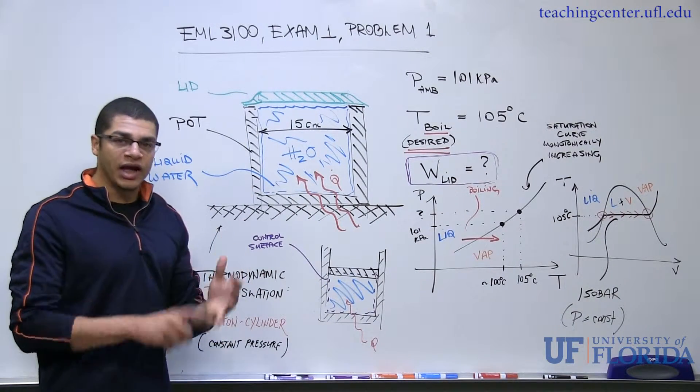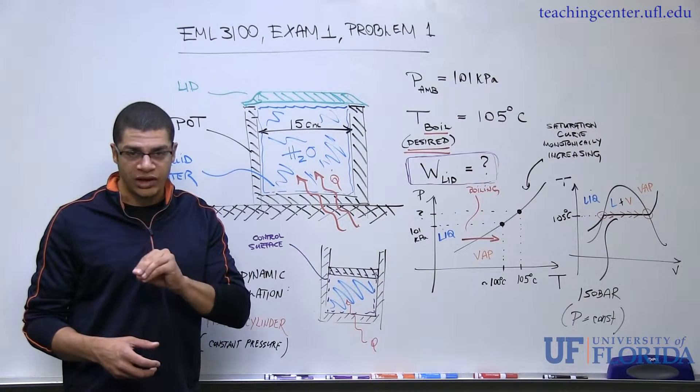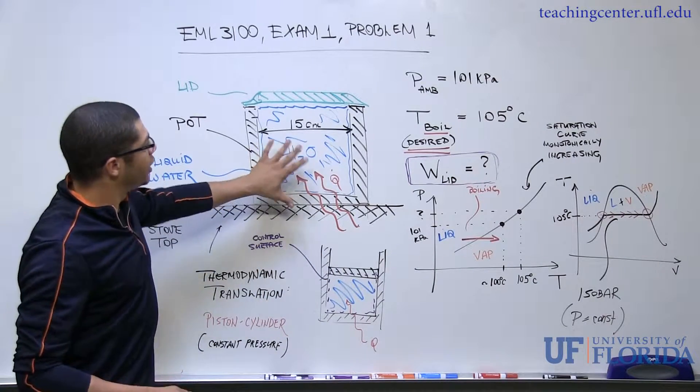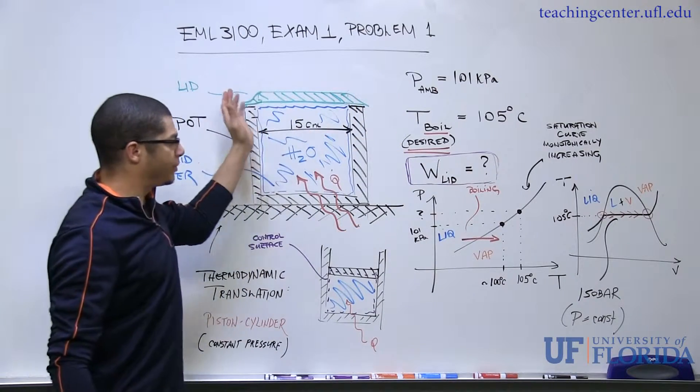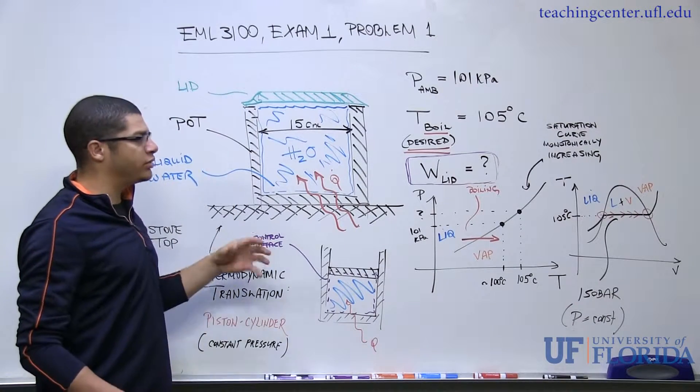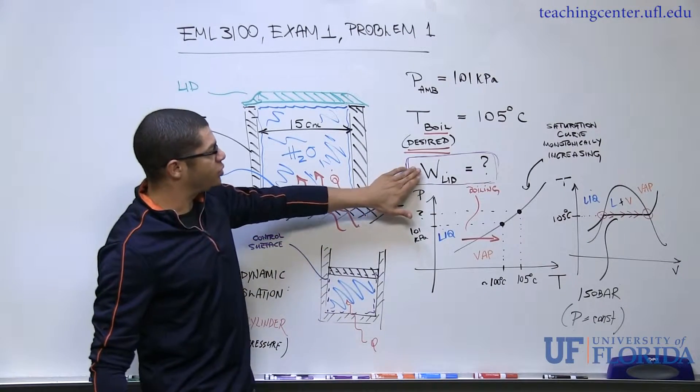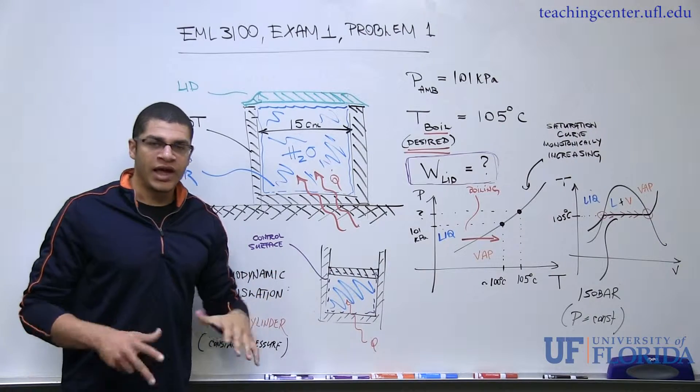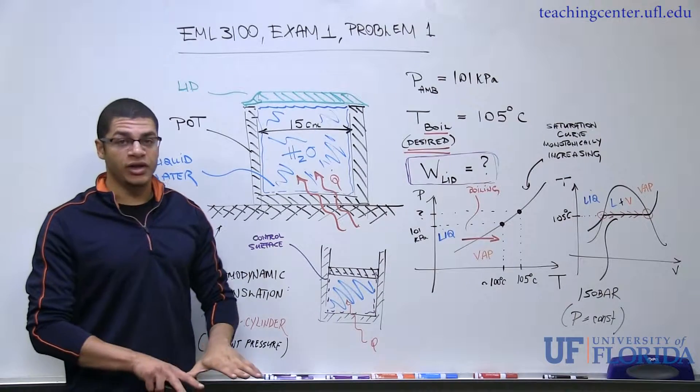So again to recap, boiling is a constant pressure heat addition process with the initial state being a saturated liquid and the end state being a saturated vapor. Now in this problem we're given that the ambient pressure is 101 kPa. Let's just imagine that we take off the top or the lid from this problem. If we were to analyze the problem from this perspective, we wouldn't even have to be concerned with the weight of the lid. This pot is open to atmospheric pressure, and it's this pressure that is being imposed as a boundary condition on the liquid in the pot.